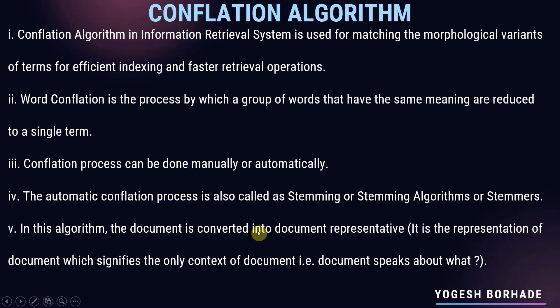In the conflation algorithm, the document is converted into a document representative. A document representative is the representation of a document that signifies only the context of the document — that is, what the document speaks about. For example, if the document is talking about 'walk', it will only store the root form 'walk' and convert all morphological variants into that single form.